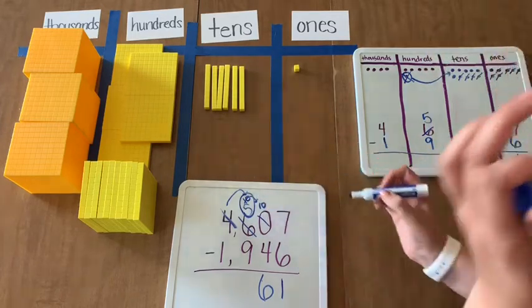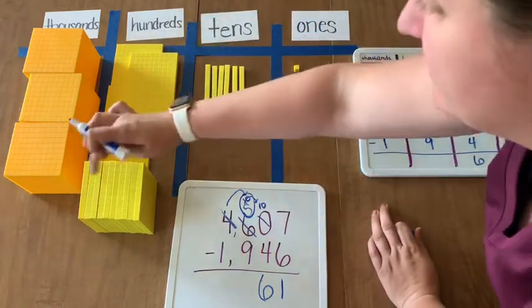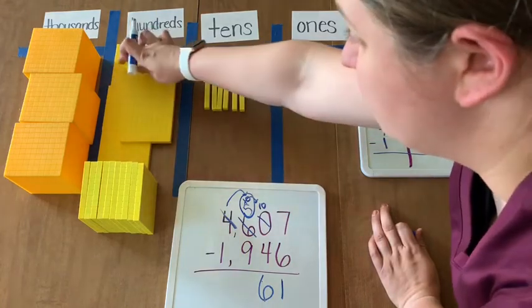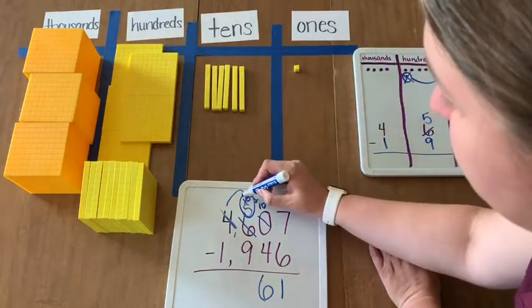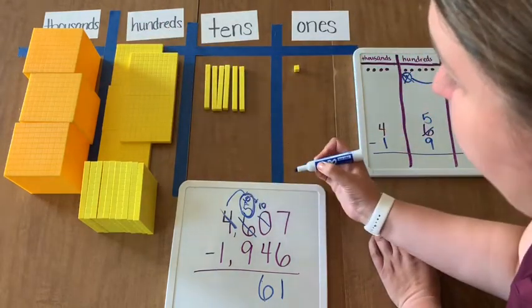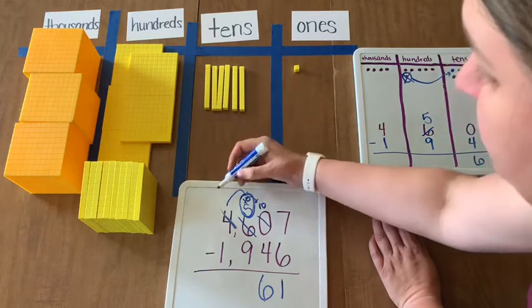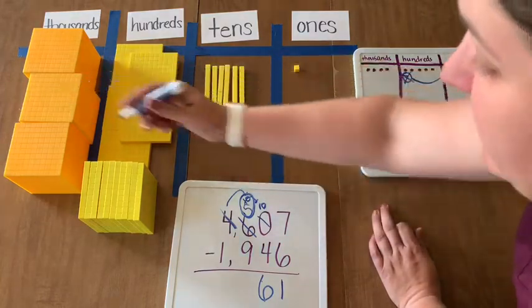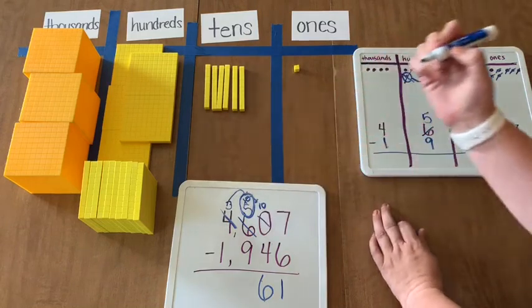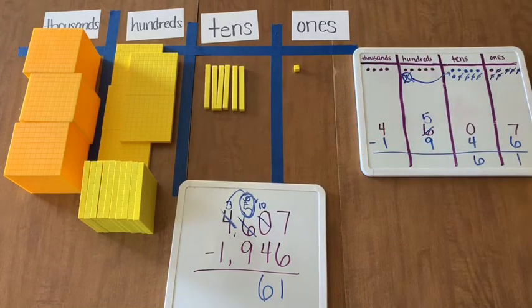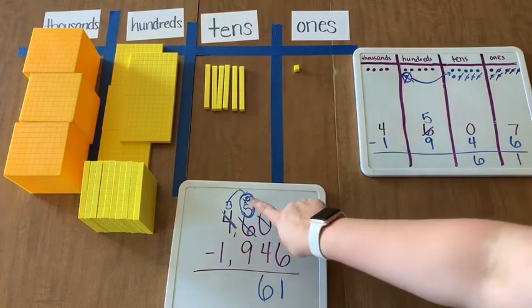So now that I have taken one of my thousands and I have broken it down into 10 hundreds. That means that now in our hundreds place, we have 10, 11, 12, 13, 14, 15 hundreds left. 10 and 5 is 15. I have 3 thousands remaining and I can subtract my hundreds.